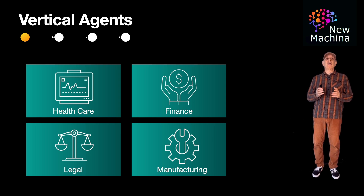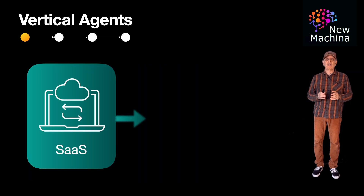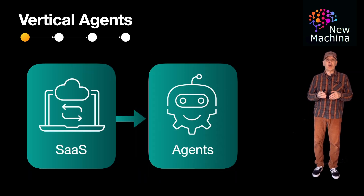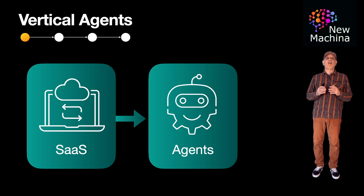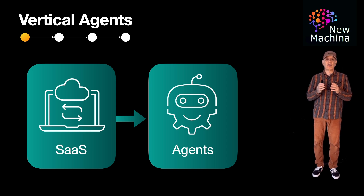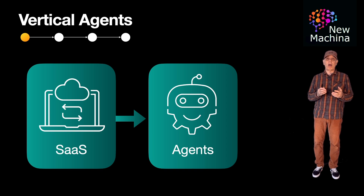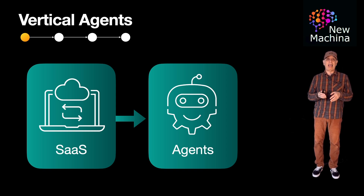There's a sense in the industry that vertical agents will disrupt and eventually replace today's SaaS, or software-as-a-service, companies. So what's driving this sentiment? These emerging vertical agents are designed to replace the need for traditional SaaS user interfaces. Vertical agents will actually take on the work for users autonomously or through natural language interaction, rather than requiring users to navigate web-based menus, dashboards, and forms.